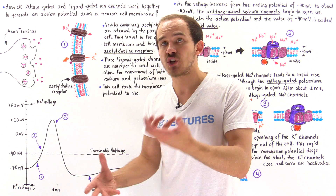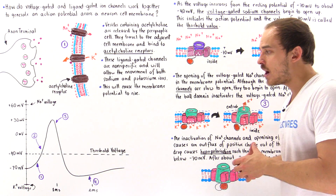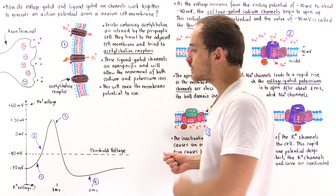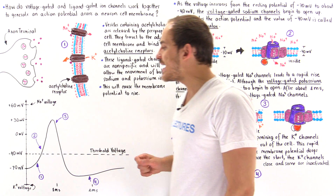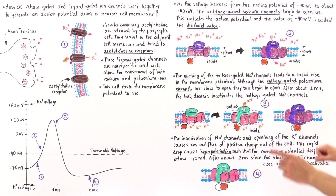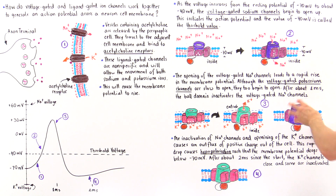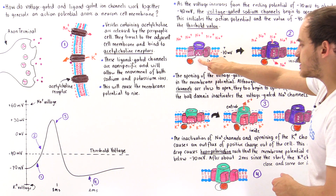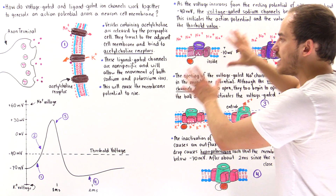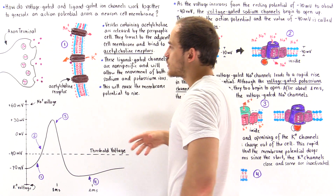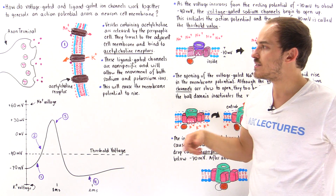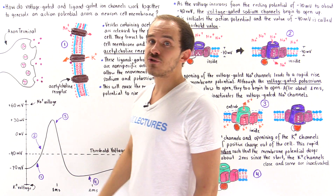With the help of the sodium-potassium ATPase pump, the resting membrane potential is eventually returned to negative 70 millivolts. The channels are reset back to their original states, and the cycle can basically repeat itself again. This is how the two types of ion channels — voltage-gated and ligand-gated — work together to generate the action potential.